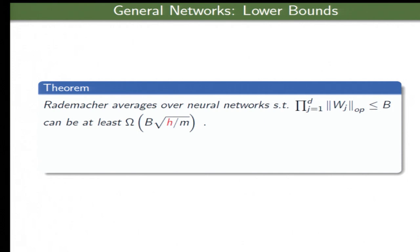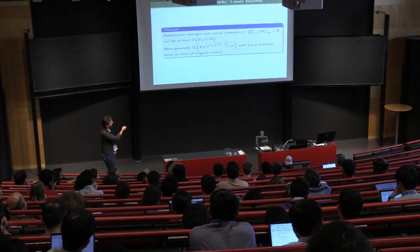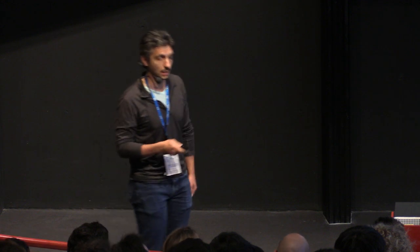Let's start with lower bounds. If the only thing you do is you control the product of operator norms of the network, then it's impossible to avoid the dependence on the width of the network, so that's an easy lower bound. So at least some dependence on the dimension of the network is unavoidable. If you extend this to p Schatten, so Schatten is just the Lp norm on the singular values. If you only bound the product of Schatten norms of the network, then you still have some dependence, which disappears at Schatten p equals to 2, which is also known as the Frobenius norm. So let's try to see, for Frobenius norm, we can get a completely clean result.